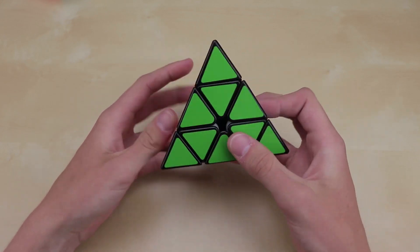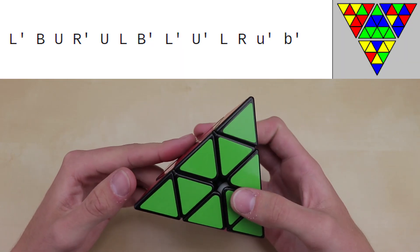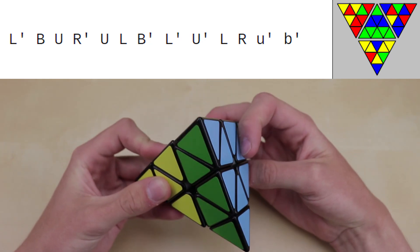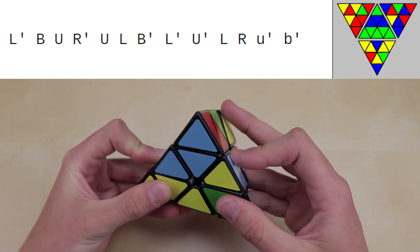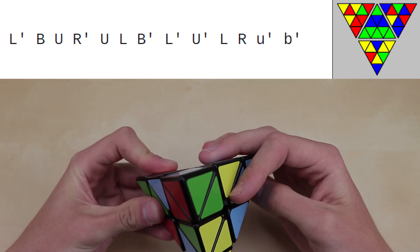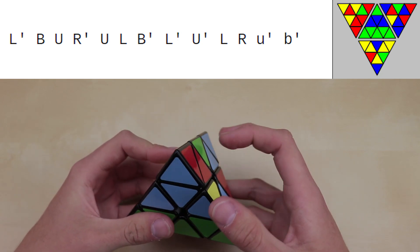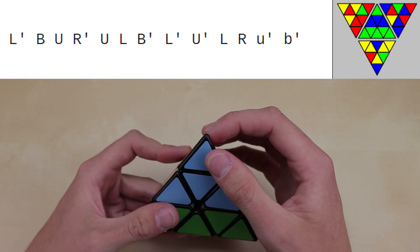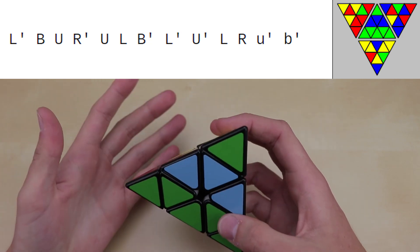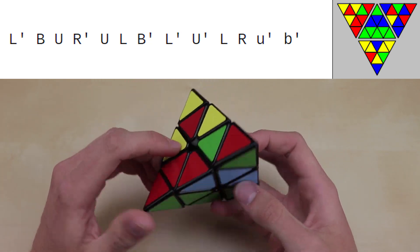So now, putting that all together, we should be able to now do a full scramble on the Pyraminx. So let's hold yellow on the bottom, and green in the front, and I'll pull up an official WCA scramble. So we have L prime, which is, of course, the left side counterclockwise, B, which is the back side clockwise, U prime, R prime, U prime, L prime, B prime, L prime, U prime, L prime, R prime, and then we have a lowercase u prime, which means the tip, and then we have a lowercase b prime. You'll always have up to four tip moves, and so here's the scramble, we can check it on the picture, and it looks correct.